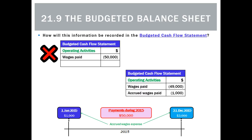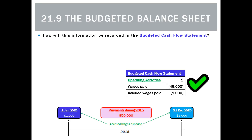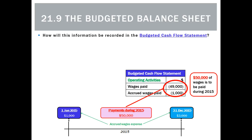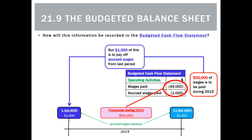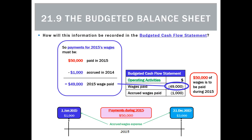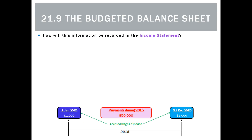We eliminate any options whose payments don't total $50,000, since that's what was paid. The correct answer is wages paid of $49,000 for this period and accrued wages paid of $1,000 for last period. The reason is that $1,000 of the $50,000 paid was used to pay off the old accrued wages from last period — wages incurred last period but not yet paid. So $49,000 of the $50,000 relates to wages for this period.